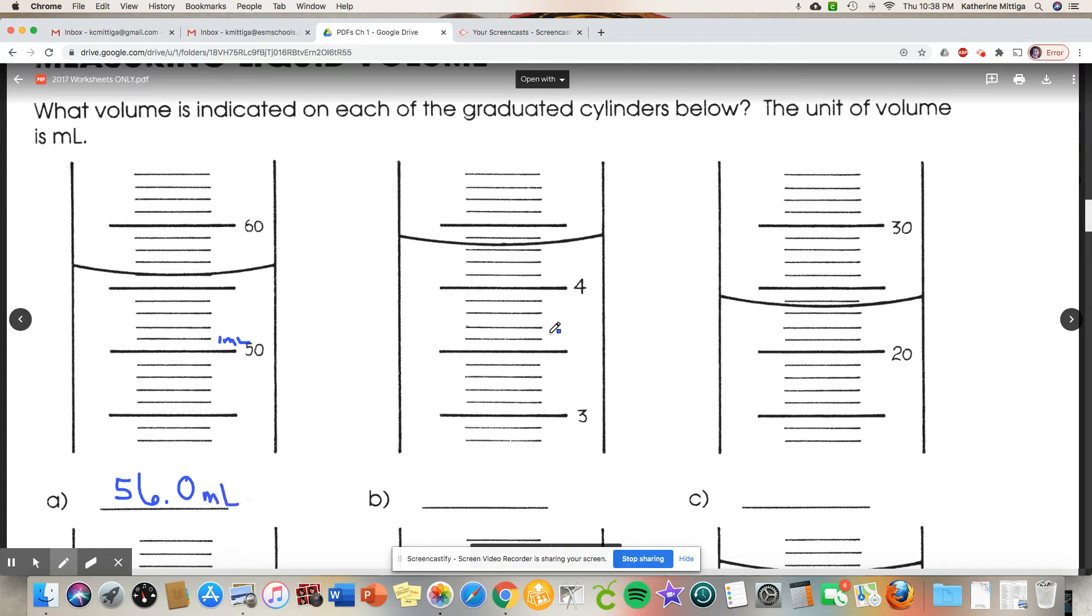In this one it looks like each of these lines are worth one tenth, so this is 4.5. So this is 4.1234, so we definitely know it's 4.3 but it's a little bit beyond. I would say it's right in the middle, so since we know the tenths we estimate the hundredths: 4.35.